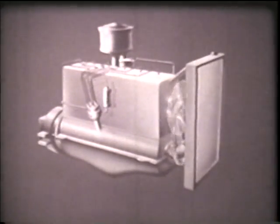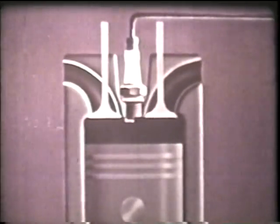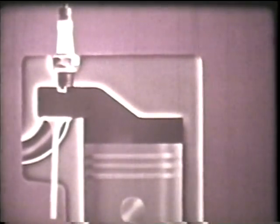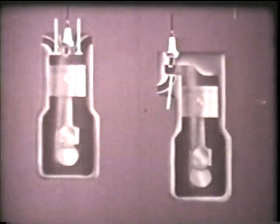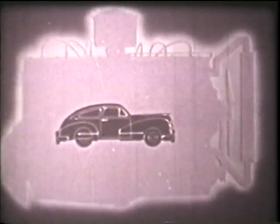We now have a complete automobile engine of the overhead valve type. The other common type is the L-head engine, in which the valves are arranged upside down and off to one side of the cylinder. The L-head and overhead valve engines are the types commonly used in automobiles.